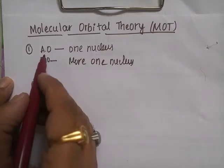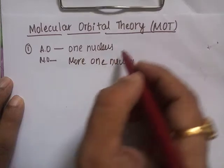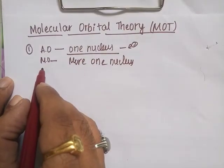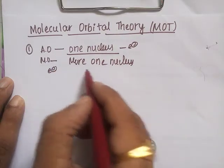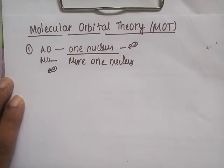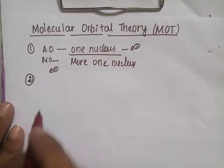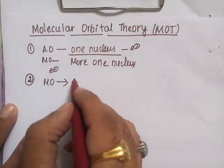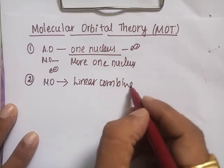In the case of the atomic orbital, the electrons will be influenced by only one nucleus. In the case of molecular orbitals, the electrons will be influenced by more than one nucleus, depending upon the number of atoms involved.